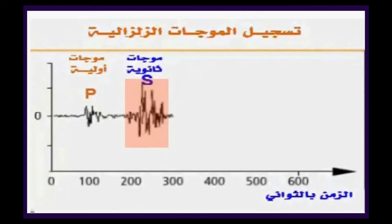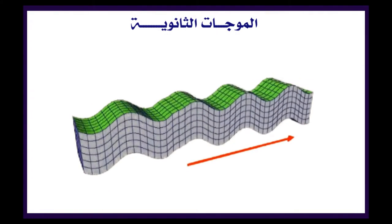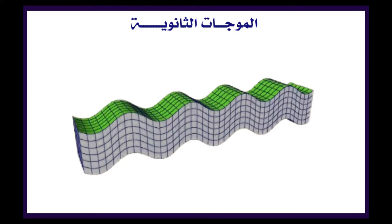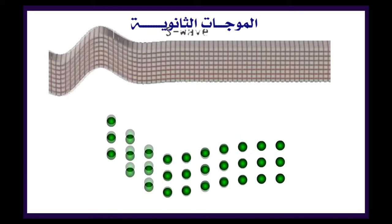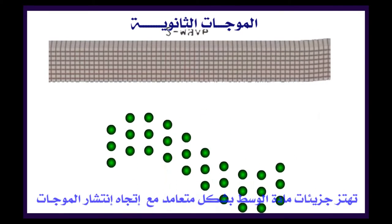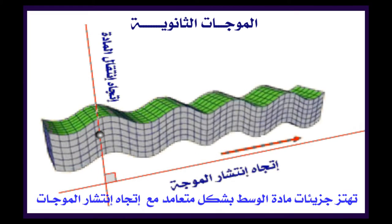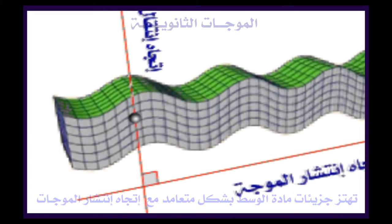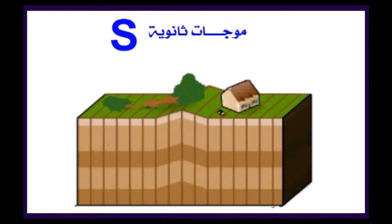فيما يخص الموجات الزلزالية S، تعرف كذلك باسم الموجات الثانوية، تتميز بقوة أكبر من الموجات الزلزالية P، لها نمط انتشار تموجي. فيما يخص انتقال جزيئات مادة الوسط، فهذه الأخيرة تهتز بشكل متعامل مع اتجاه انتشار الموجة، وتأثيرها على سطح الأرض يكون نسبياً ضعيفاً.